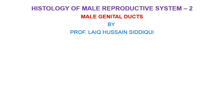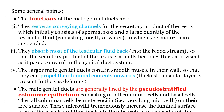Bismillahirrahmanirrahim. Dear students, today we will take the topic of male genital ducts. We are discussing the male reproductive system. We have already discussed the histology of gonads, that is testes in the case of males. Now we pass on to the next segment of the male reproductive system, that is the male genital duct. So some general points before we go to the details — it's very important to know some general points which will facilitate you in understanding and remembering the histology of male genital ducts. So the functions: first we have to take, and you can see the three principal functions of the genital ducts.